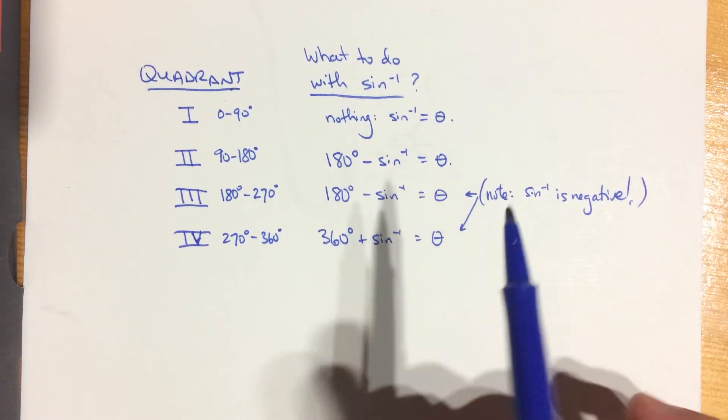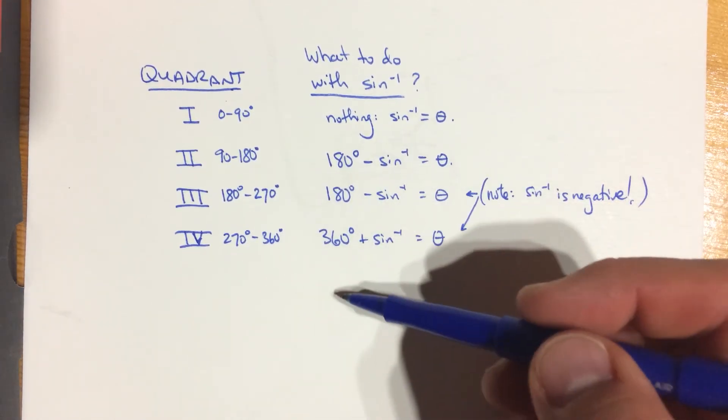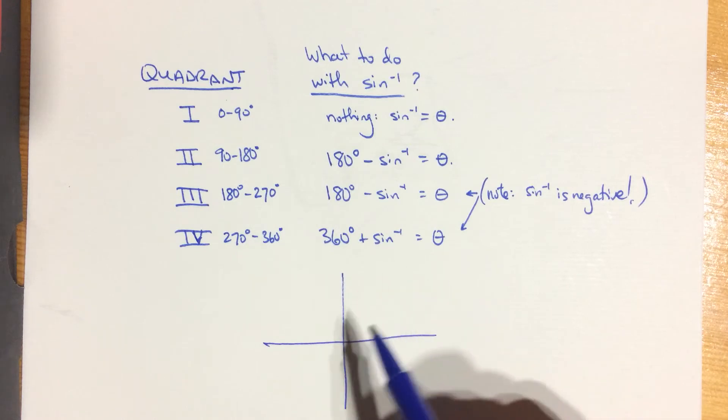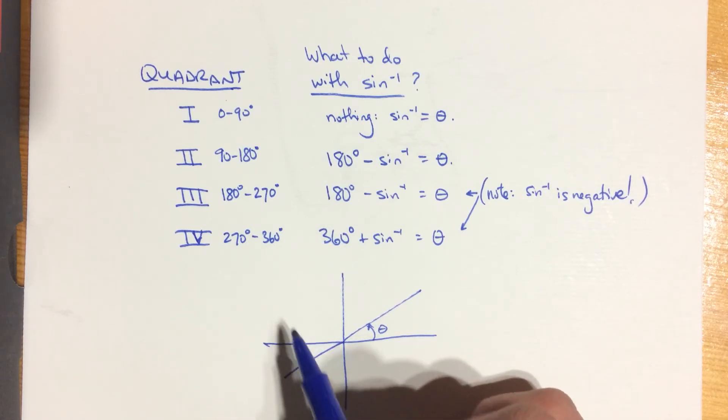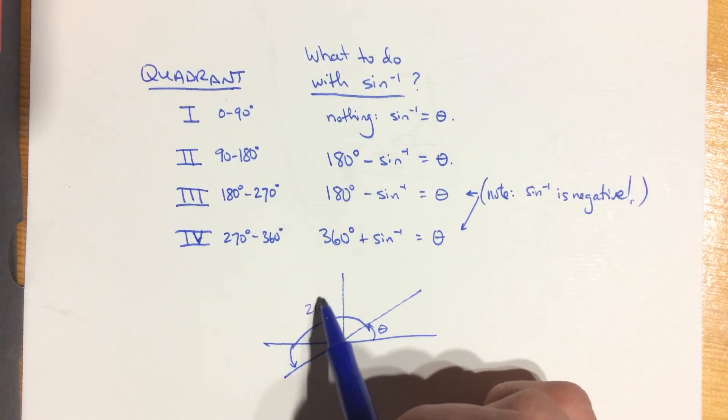But rather than just memorizing sort of a list of rules here, think about the graph. Think about where the angle is and what kind of value you need to get. And so if you get an answer of something like negative 30 and you know that your angle should be over here, you can figure out pretty quickly that you want to have an angle of 210 degrees.